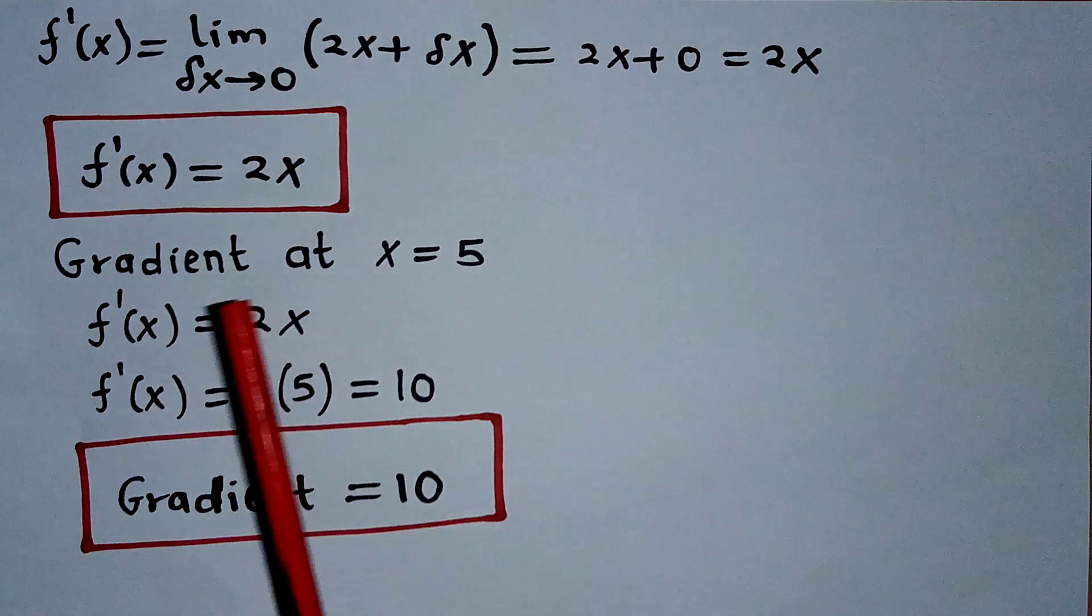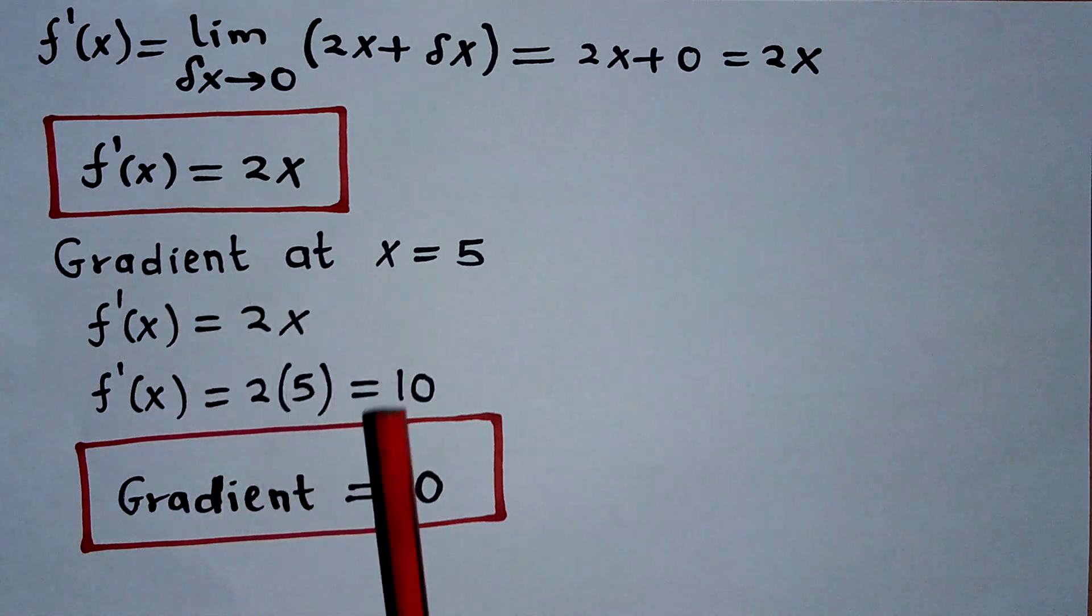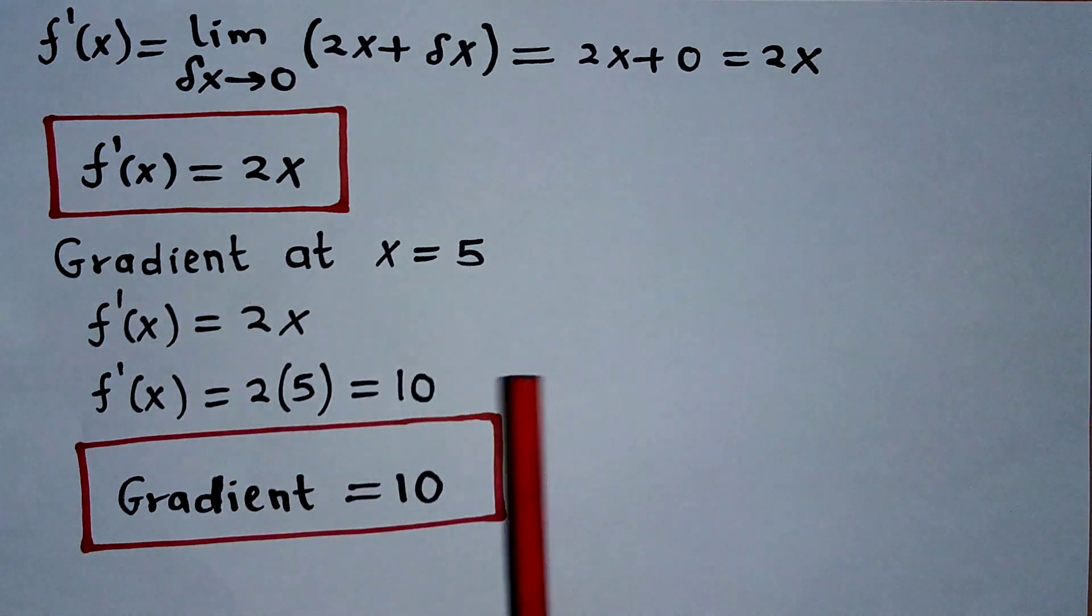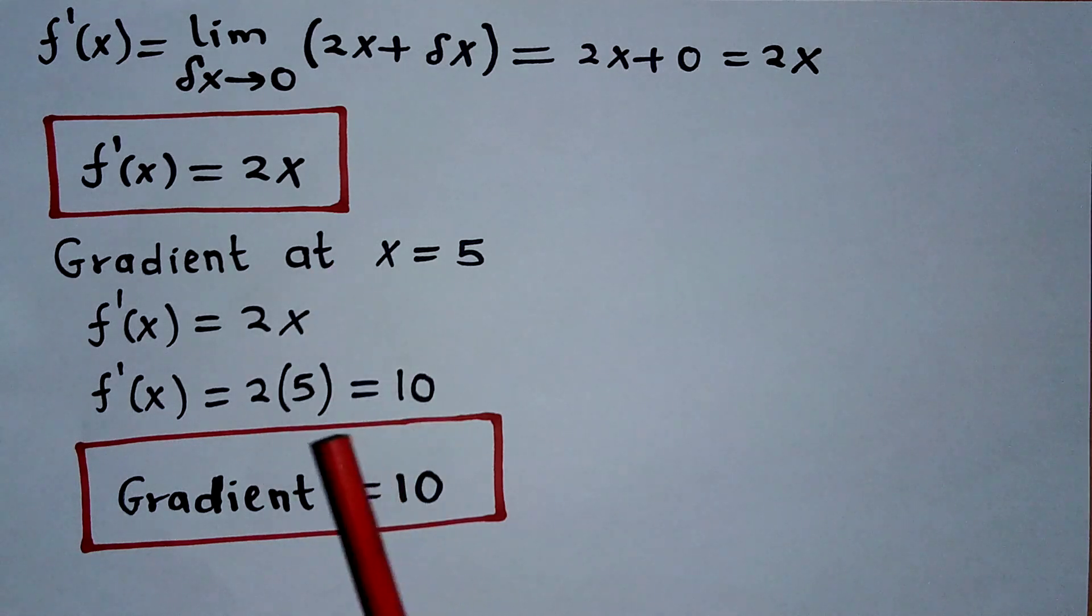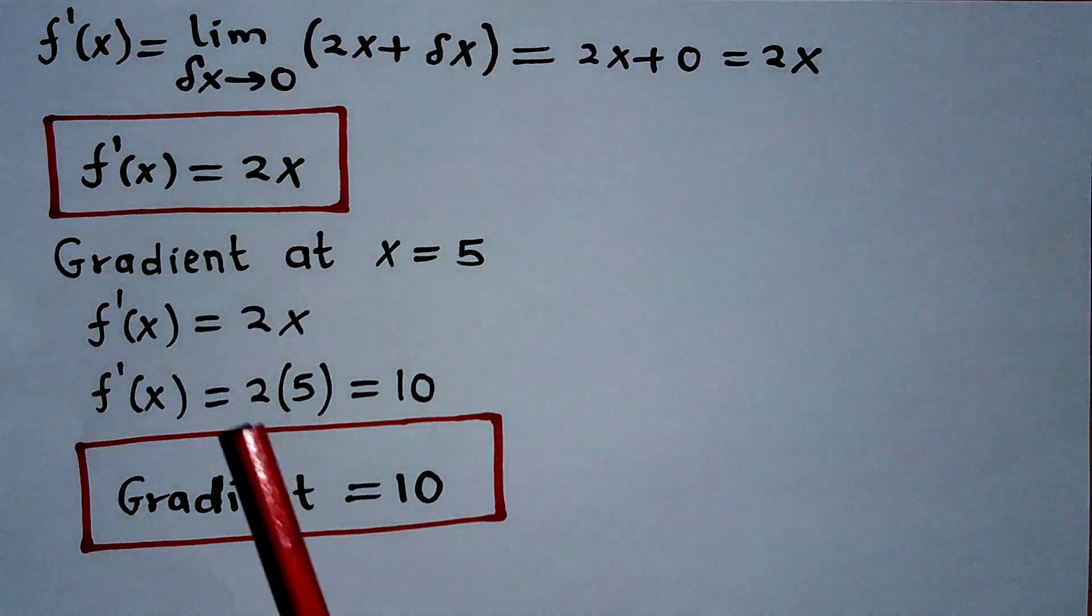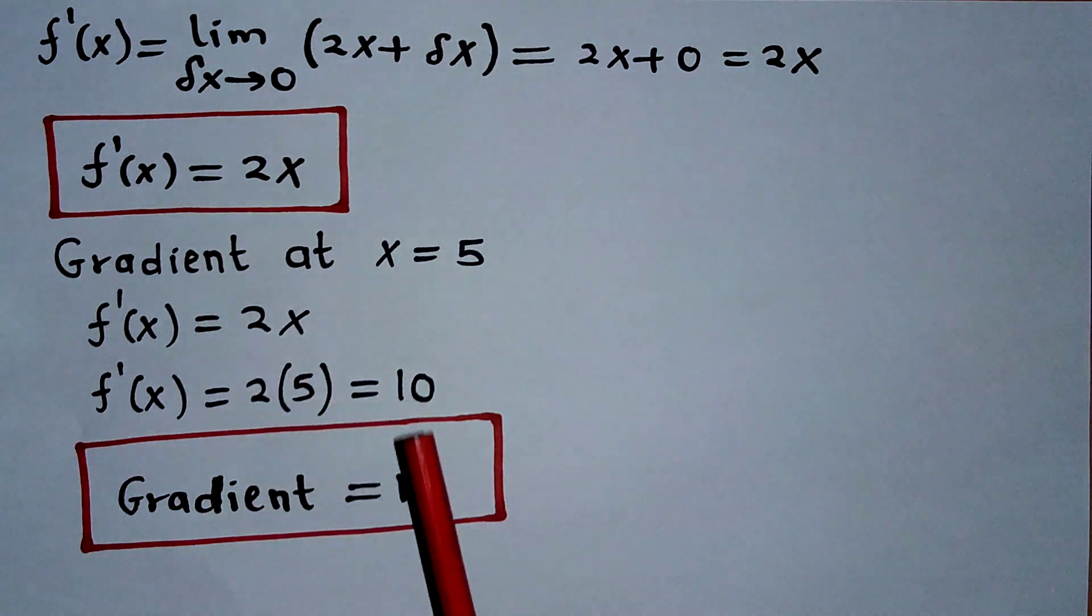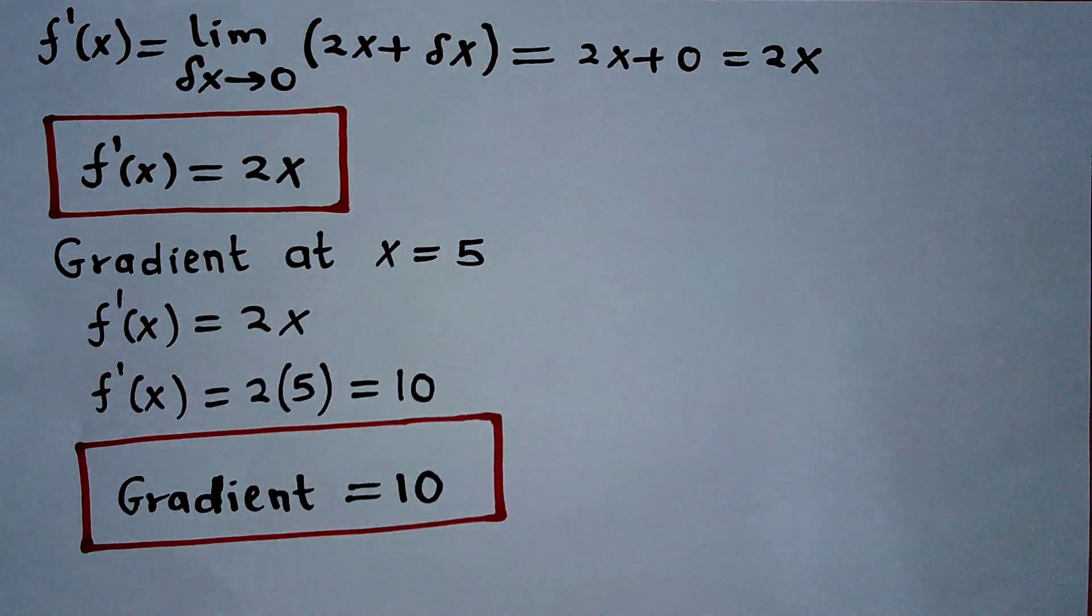We have been asked to find the gradient at point x = 5. That means I'm going to replace my value of x with 5, and that is going to give me the gradient as 2 × 5, which is equivalent to 10. Thank you so much for watching.